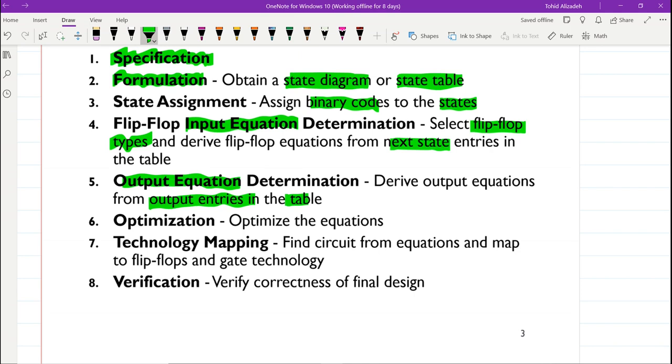We also need to find the output equations. We need to derive the output equations from the output entries in the state table. We need to go through optimization in order to optimize the equations and lower the cost of the implementation. If needed, we will do the technology mapping to implement the combinational circuit using NAND gates or NOR gates, for example. Finally, we will go through verification to verify that what we have designed is doing what it is supposed to do.